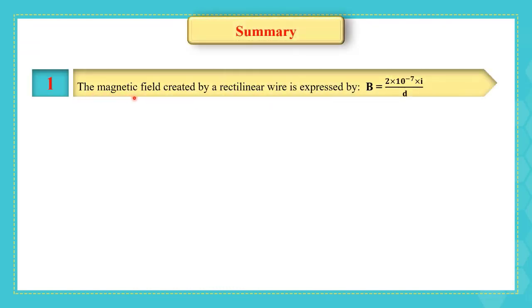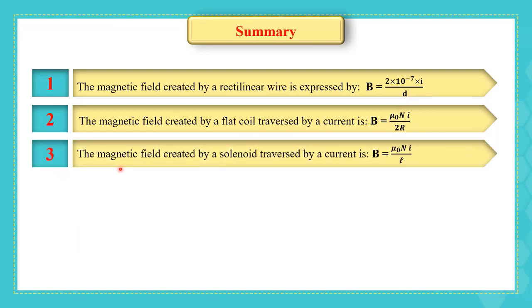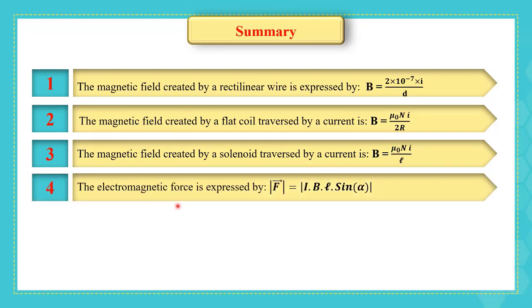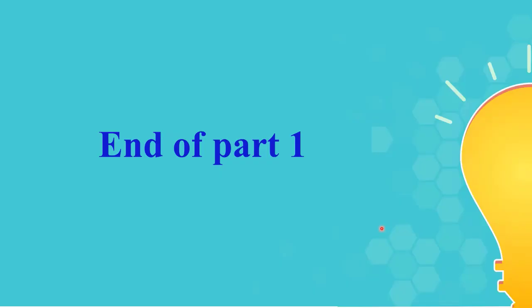To summarize: the magnetic field of a rectilinear wire is B = 2 × 10⁻⁷ × I / D; for a flat coil, B = μ₀NI / (2R); for a solenoid, B = μ₀NI / L. The electromagnetic (Laplace's) force is F = IBL sin α. Finally, the magnetic flux for N turns is Φ = NBS cos(angle between B and n̂). This is the end of Part 1. Thank you for watching.